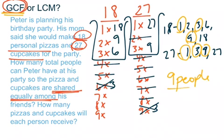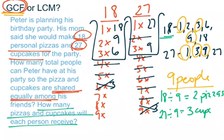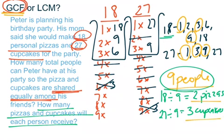For the second part, we need to find how many pizzas and cupcakes each person receives. With 9 people invited: 18 divided by 9 equals 2, so each person gets 2 pizzas. Then 27 divided by 9 equals 3, so each person gets 3 cupcakes. So Peter can invite 9 people, and each person would get 2 pizzas and 3 cupcakes.